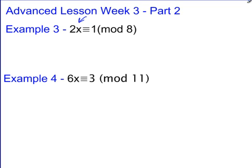So we need to think of what times 2 is going to give me 1 mod 8. Not because this is 1, but because we want the coefficient to be 1. Well, what you're going to find out in this particular problem is there is nothing that's going to give you 1 mod 8, so that doesn't work.